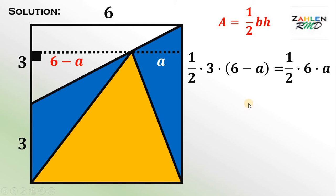At this point, we can divide both sides by 1 half, so 1 half cancel out, and then distribute the 3. So we have 18 minus 3A equals 6A.